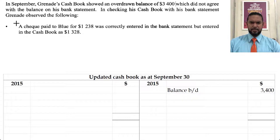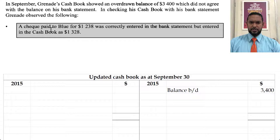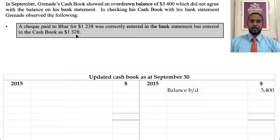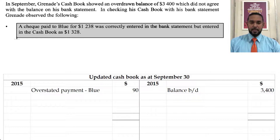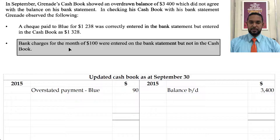A check paid to Blue for 1,238 was correctly entered in the bank statement but entered in the cash book as 1,328. That's an overstated payment, meaning on the credit side the payment would have been too high by 90 dollars. So we're going to have to go on the debit side and put 90 to balance it back off.